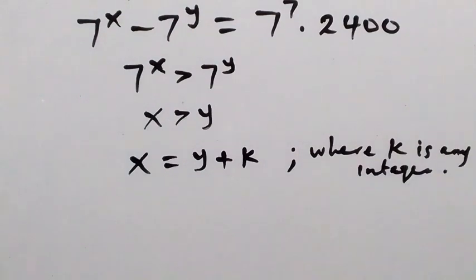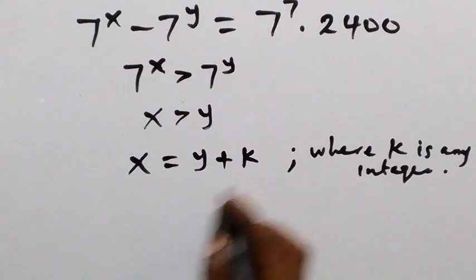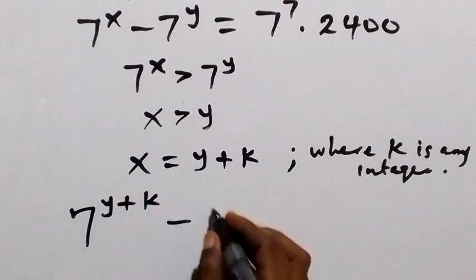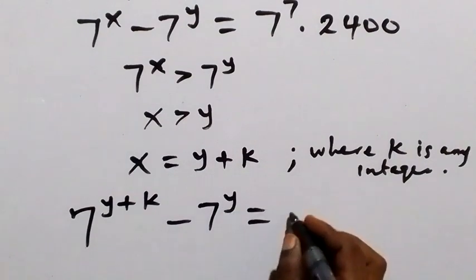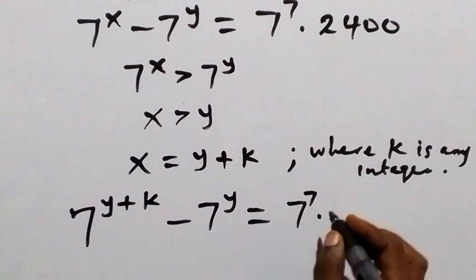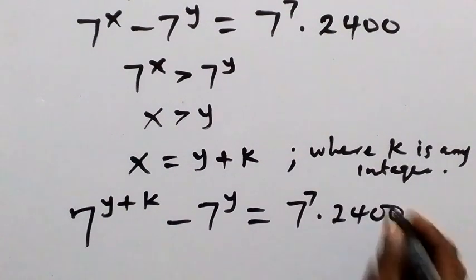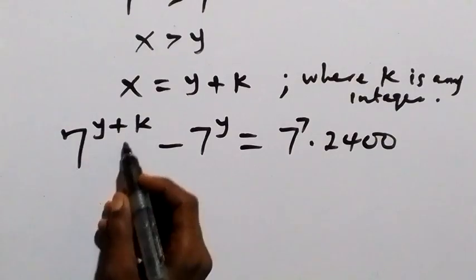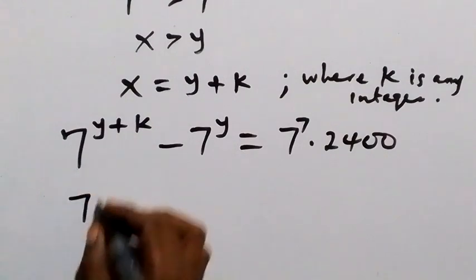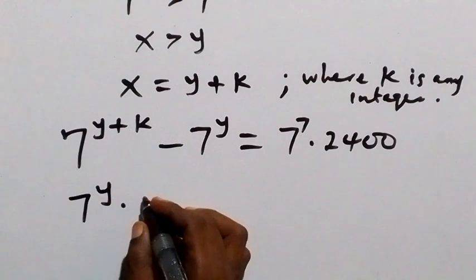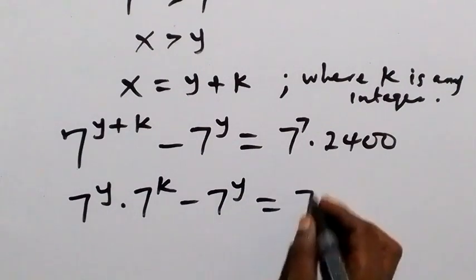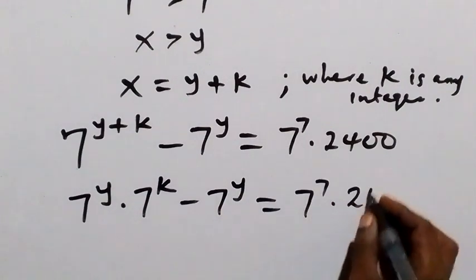The equation now becomes: 7 raised to power x, which is 7 raised to power y plus k, minus 7 raised to power y, equals 7 raised to power 7 times 2400. Applying the law of indices, we separate this and have 7 raised to power y multiplied by 7 raised to power k, minus 7 raised to power y, equals 7 raised to power 7 times 2400.